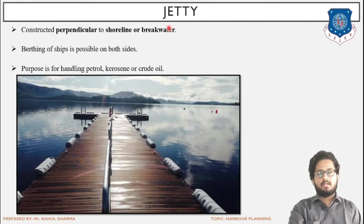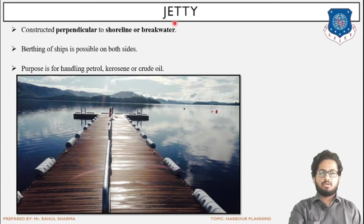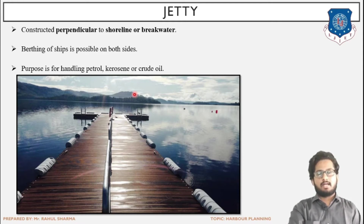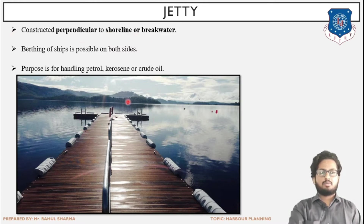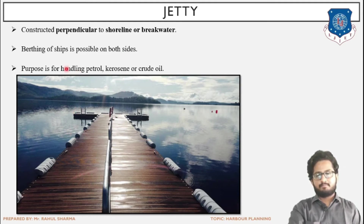Next is jetty. Comparing jetty with pier, bar, and quay — we learnt these three terms previously. The direction of pier was perpendicular to the shore and the direction of jetty is also perpendicular to the shore. That is the similarity between pier and jetty: both have direction or alignment perpendicular to the shore. Whenever the alignment is perpendicular to the shore, berthing can be done on both the sides. So jetty is constructed perpendicular to the shoreline or breakwater. Basically the function is to provide berthing, to give accommodation, and to carry out the loading and unloading work of cargo or commodity. Berthing of ship is possible on both sides. The purpose is for handling petroleum, kerosene, or similar light commodities.